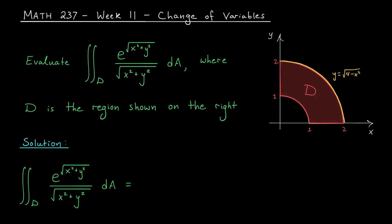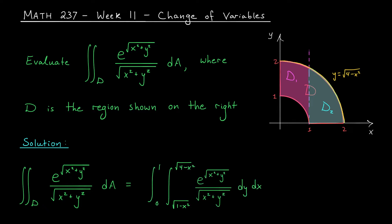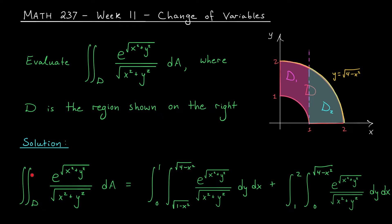In this example, we could try cutting the region at x equals 1. If we slice the region vertically, we get two pieces — call them d1 and d2. To integrate over d1, y is nicely bounded between the two circular arcs: y goes from the square root of 1 minus x squared to the square root of 4 minus x squared, while x moves between 0 and 1. Then we add the integral over d2, where y is bounded between the x-axis y equals 0 and the larger circular arc y equals the square root of 4 minus x squared, and x runs from 1 to 2. This is one setup for tackling our double integral.